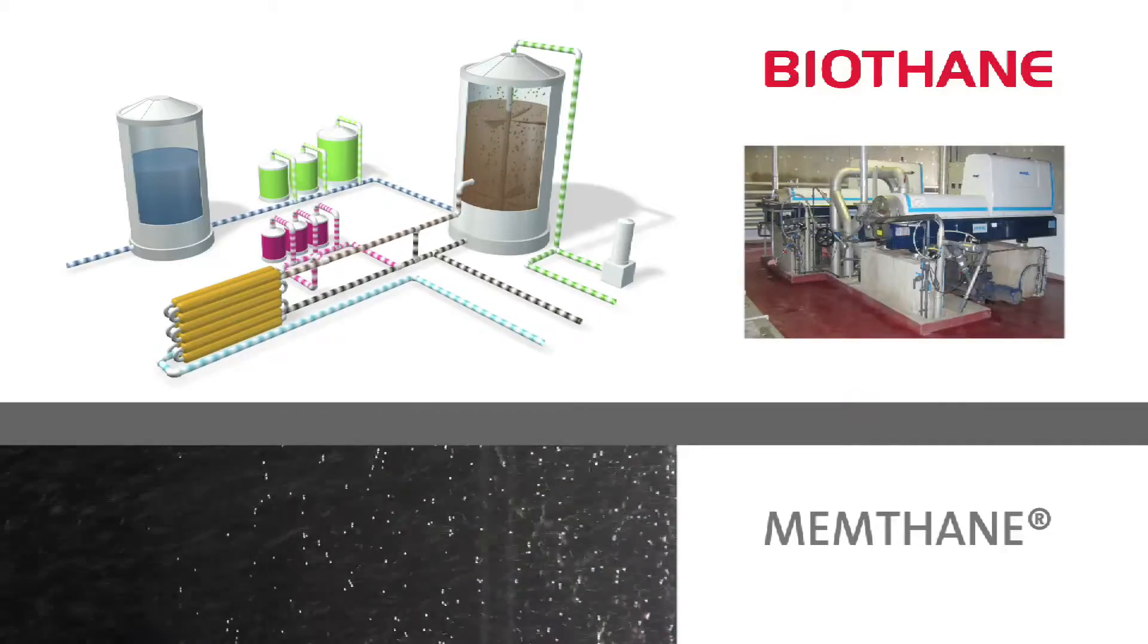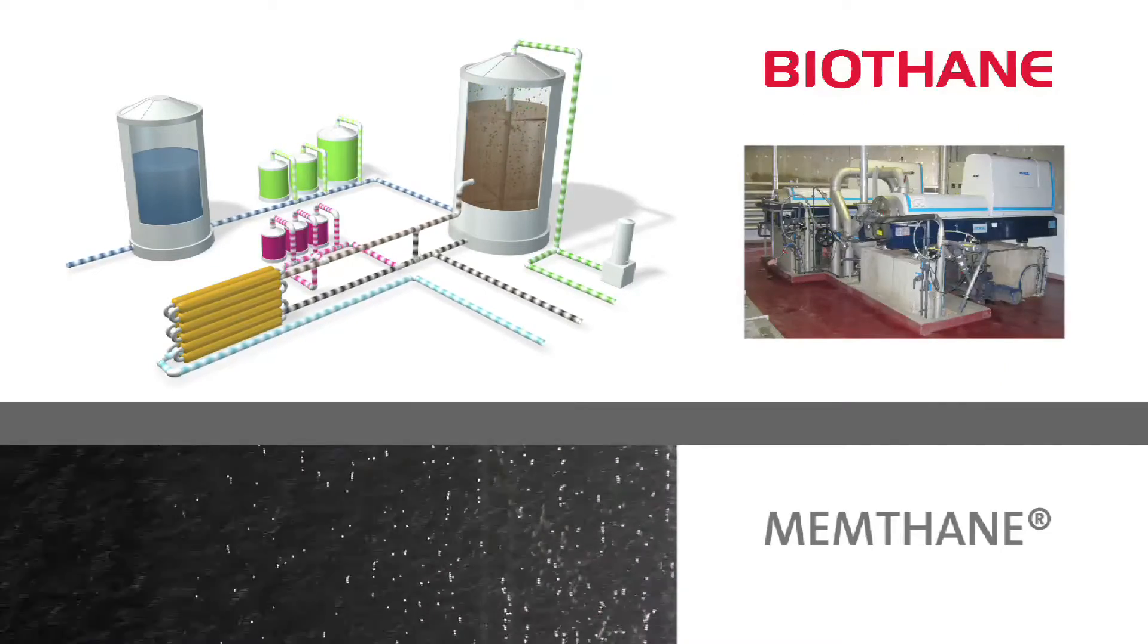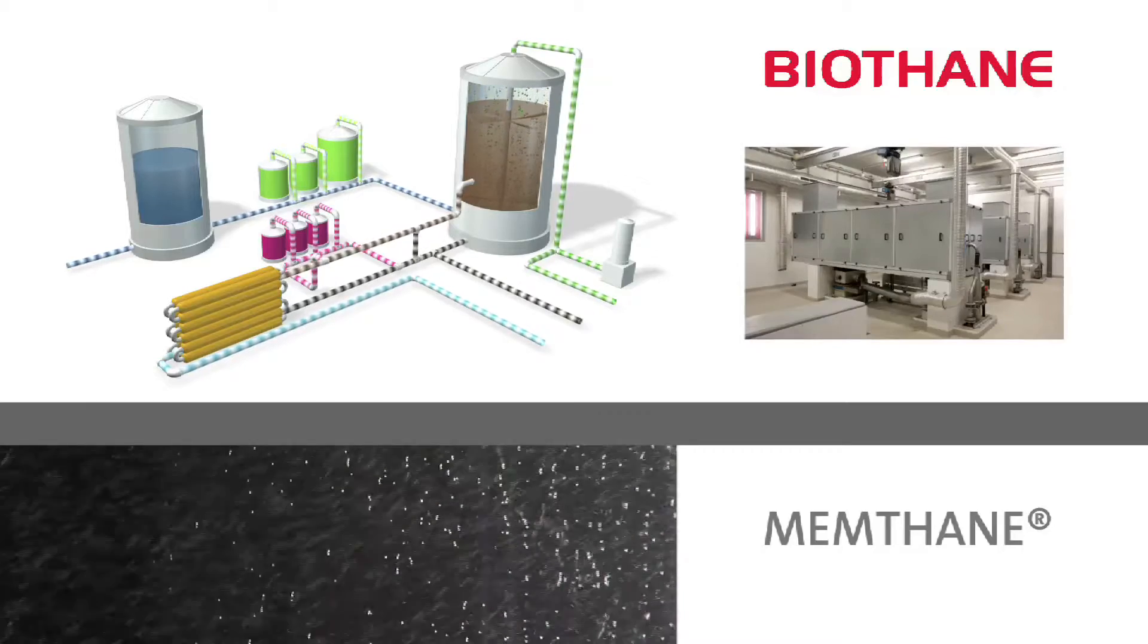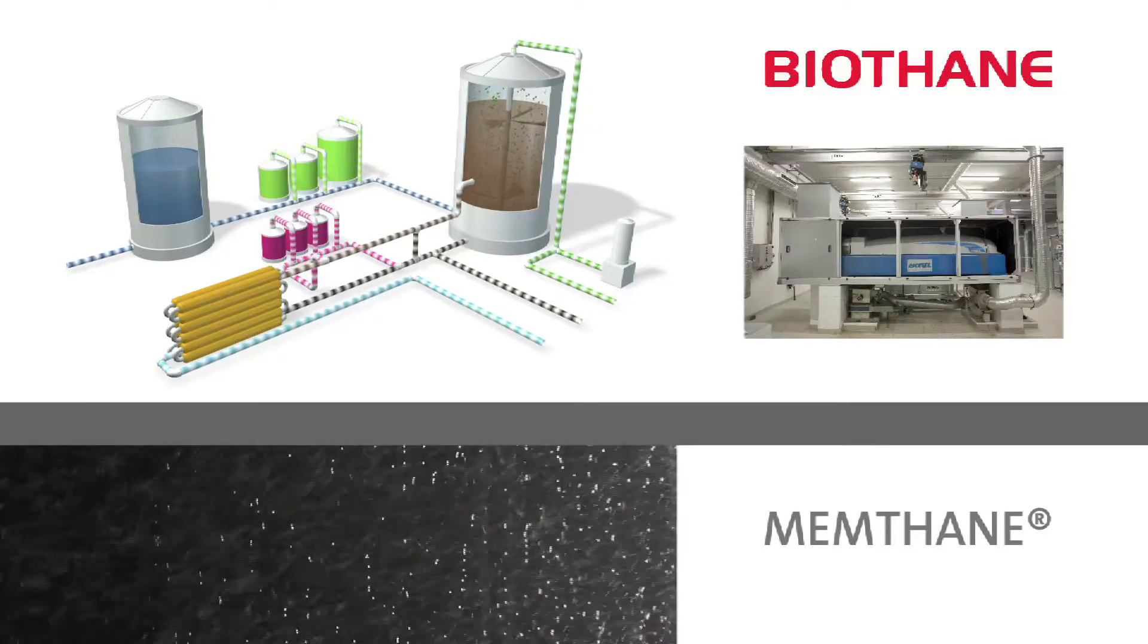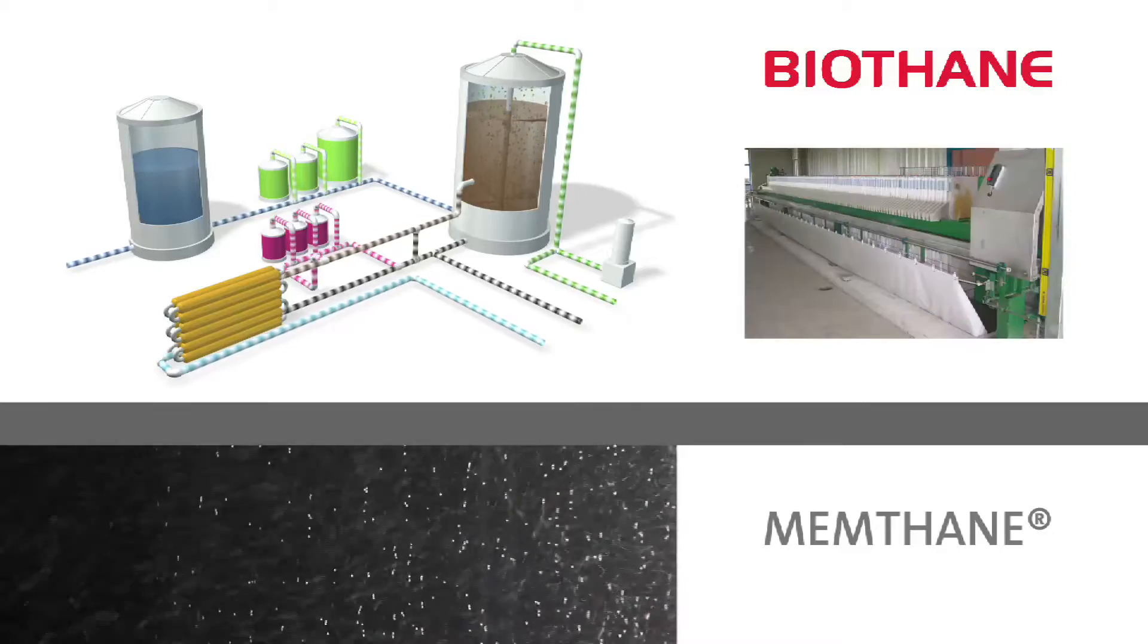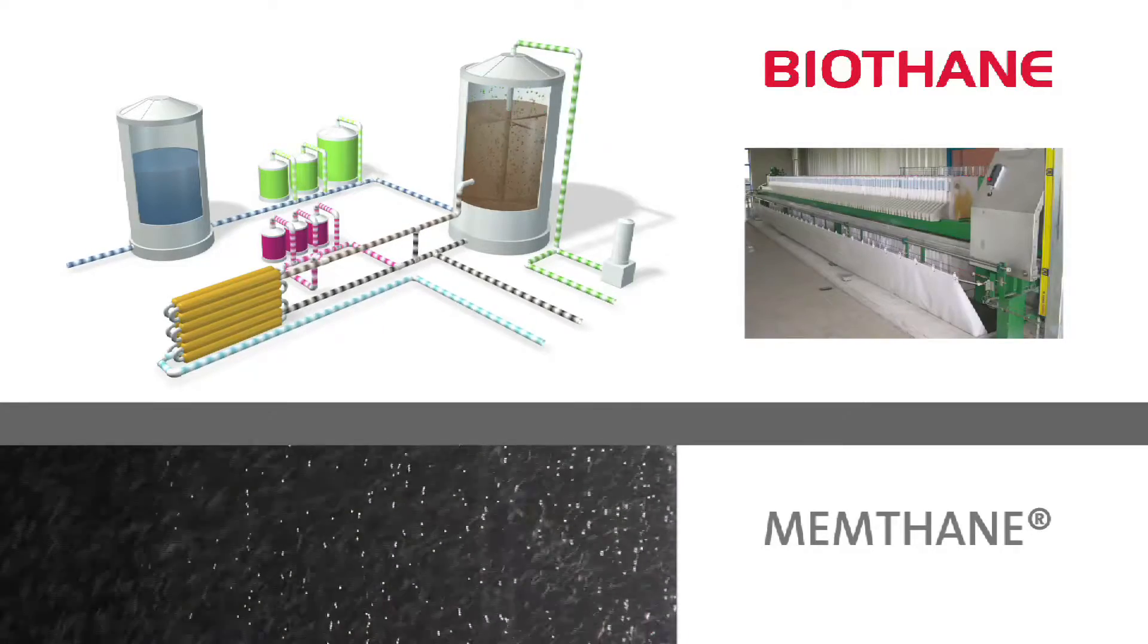In the Memthane system the biomass production can be limited by employing long sludge retention times. Conventional dewatering is used to produce a sludge cake.